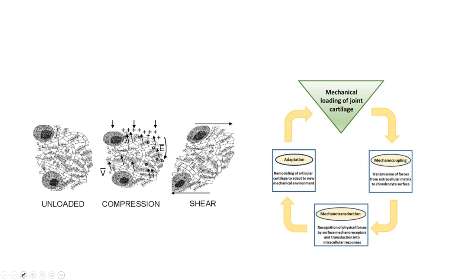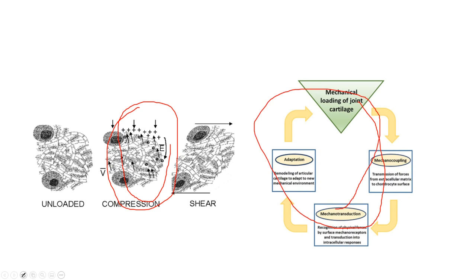Appositional growth of the ECM strengthens the collagen, whereas shear deformation does not induce the same changes. This is really why weight-bearing exercise with compression is so important. Here's another graph showing how loading of the joint facilitates growth and remodeling of cartilage.